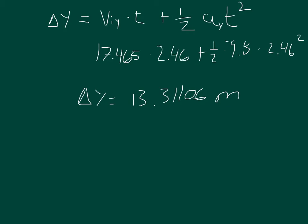However, was it on its way up or was it already falling back down when it cleared the goalpost? But the question wants to know by how much does it clear or fall short. We know that the crossbar is 3.05 meters high. So you just take 13.31106 subtract 3.05 and you get about 10.26 meters is by how much it cleared.